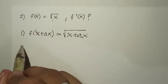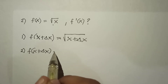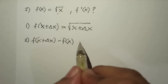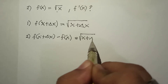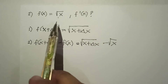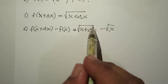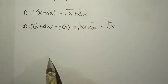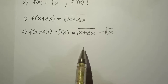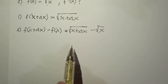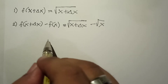In step number 2, we have f(x + Δx) minus f(x), which is √(x + Δx) minus √x. We need to subtract this one from the other. Before going to step number 3, we have to rationalize this expression — we need to find the conjugate.